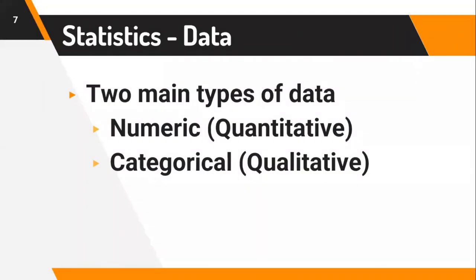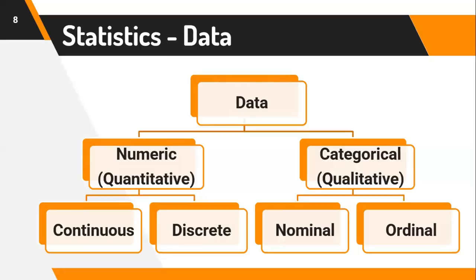When it comes to data in statistics, there are two main types: numeric data, which is also categorized as quantitative data, and categorical data, which is qualitative in nature. Presenting this tree diagram, we realize that data is branched into two — numeric and categorical. Under numeric data, we have continuous and discrete data, and under categorical data, we have nominal and ordinal. Let's take a peek at what these categories of data actually refer to.